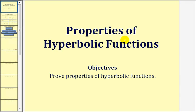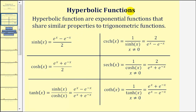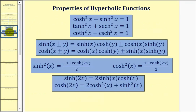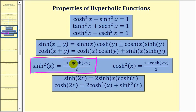Welcome back to what I think will be the last video that will show a proof of one of the properties of hyperbolic functions. Here are the six hyperbolic functions that by now we should be familiar with. If we take a look at some of the properties of these functions, we're going to focus on this property here for this video. We're going to prove hyperbolic sine squared of x is equal to the quantity negative one plus hyperbolic cosine of two x divided by two. So let's go ahead and get started.